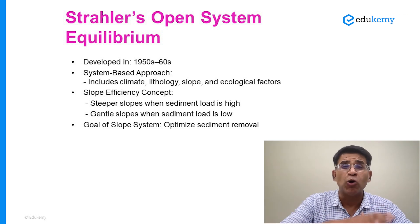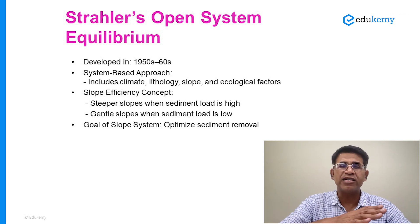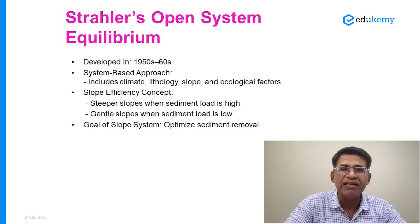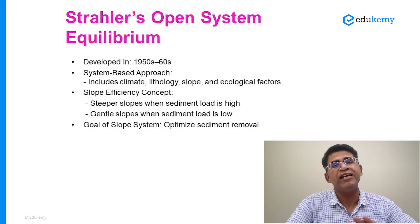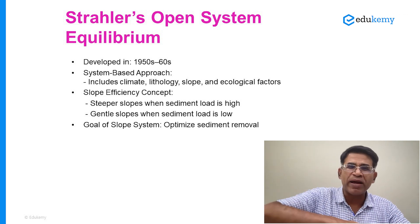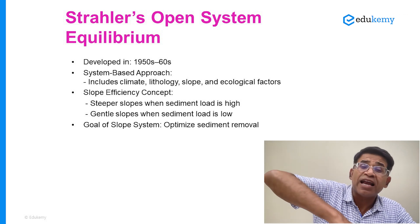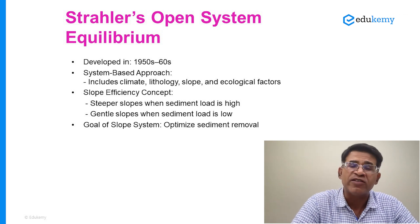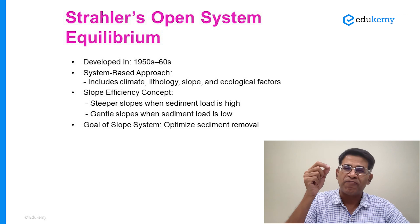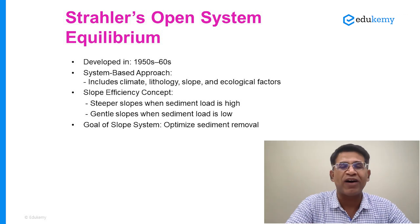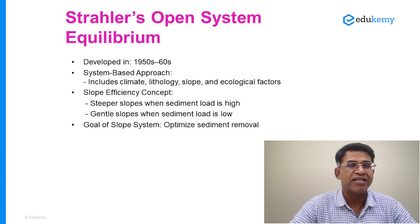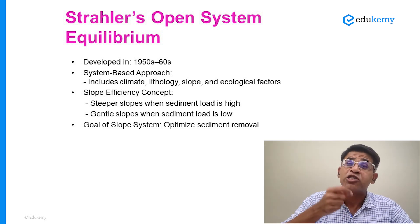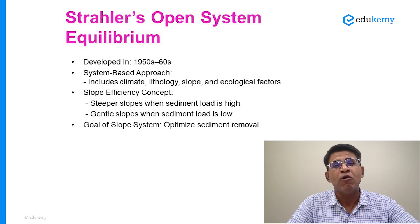Stoller's idea was that slopes have a tendency to balance — a tendency to create a slope such that sediments can be eroded. For Stoller, balance is achieved by a slope becoming efficient in removing sediments. If sediments are more, the slope will become steeper and remove sediments. If sediments are less, the slope can afford to become gentle because there is no reason for it to become steeper. So for Stoller, the process of efficiently removing sediments is the basis of how slopes adjust themselves, and slope angles and landform elevations are a function of this adjustment, not of time.